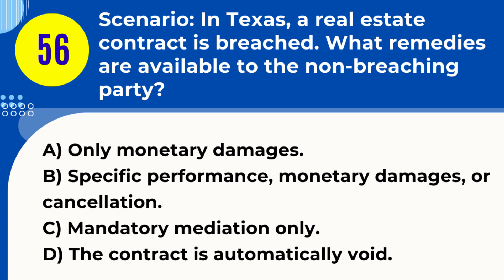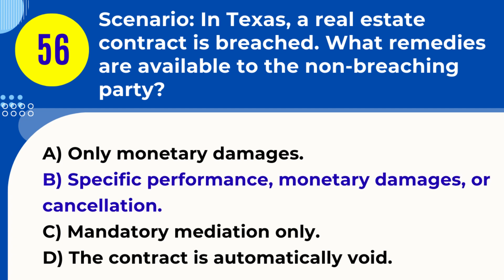Question 56. Scenario: In Texas, a real estate contract is breached. What remedies are available to the non-breaching party? A. Only monetary damages. B. Specific performance, monetary damages, or cancellation. C. Mandatory mediation only. D. The contract is automatically void. Answer: B. Specific performance, monetary damages, or cancellation. Explanation: If a real estate contract is breached in Texas, the non-breaching party may seek various remedies, including specific performance (enforcing the terms of the contract), monetary damages, or cancellation of the contract.